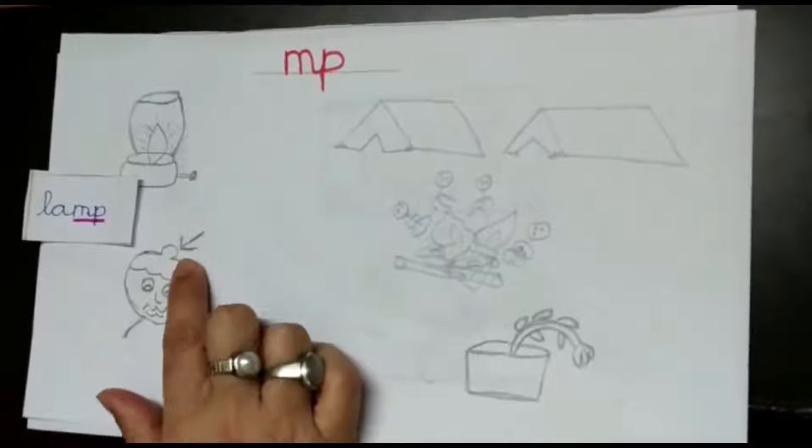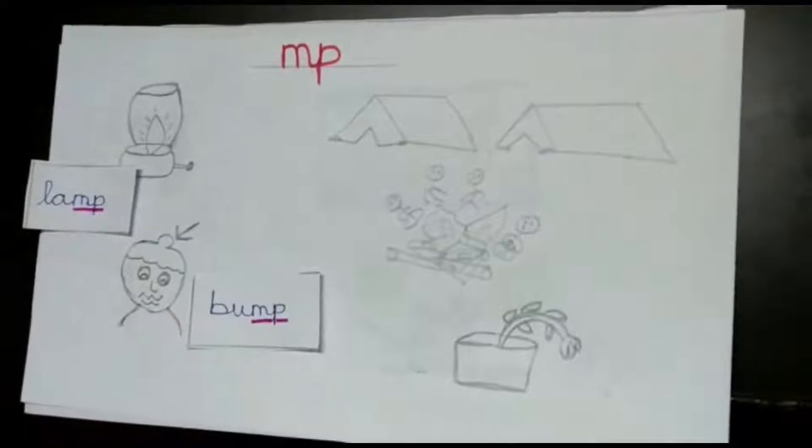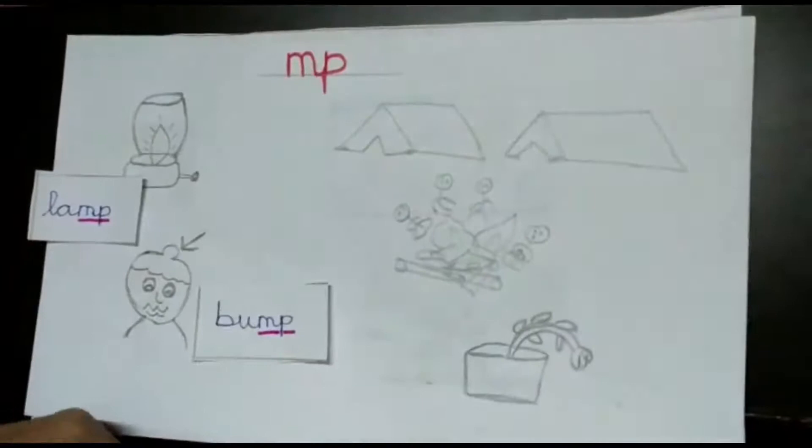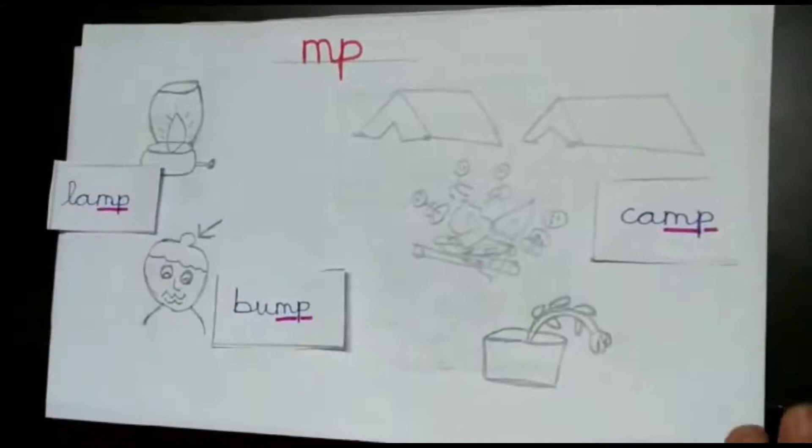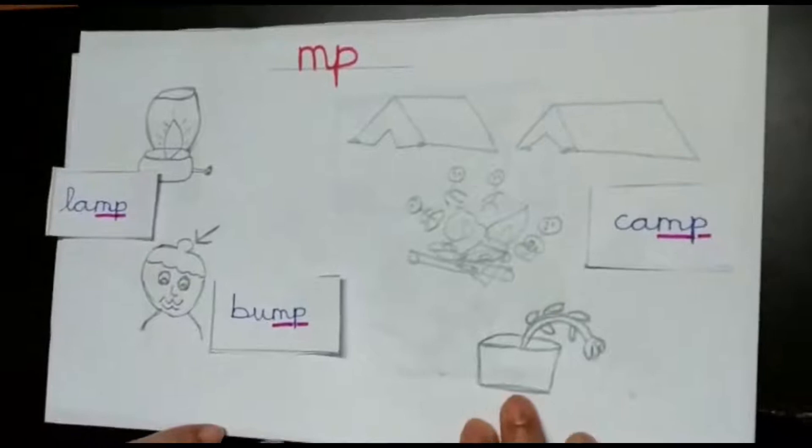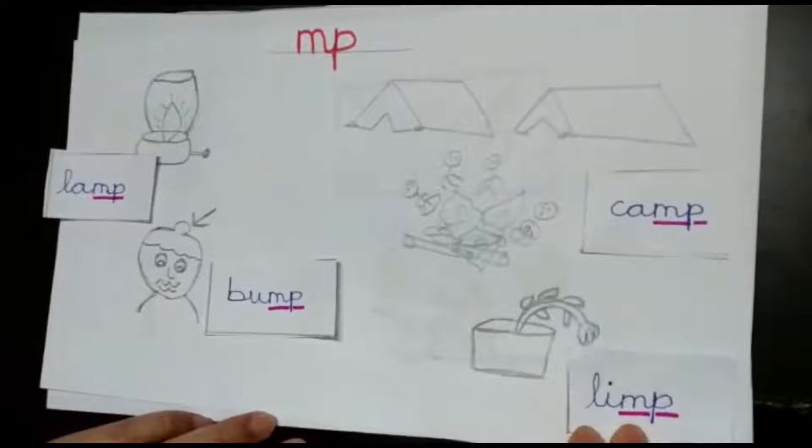Then here you can see the tents and people sitting near around the fireplace. This is a camp. These are all pencil sketches, okay? Now this plant that has not been watered, so it is limp, limp, limp.